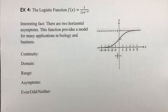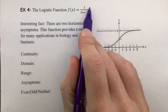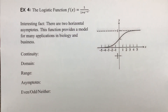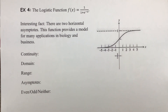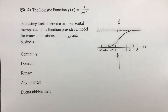The last function in this video is the logistic function: f(x) = 1 / (1 + e^(−x)). It is a bit unusual, but has practical uses. Interesting fact: it has two horizontal asymptotes — one at y = 1 and one at y = 0 (the x-axis). That is different from any other graph we've looked at. This function provides a model for many applications in biology and business.